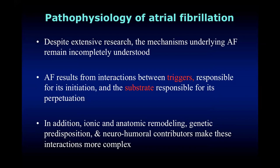There has been extensive research over the past few decades trying to understand the mechanism underlying atrial fibrillation, and although we went through a breakthrough in understanding it, the mechanism is still incompletely understood. Currently, we can say that atrial fibrillation results from an interaction between triggers, which are responsible for initiation and play a major role in paroxysmal AF, and the substrate, which is responsible for perpetuation and is the major player in persistent AF. Additionally, ionic and anatomic remodeling, genetic predisposition, and neurohumoral contributors make these interactions more complex.